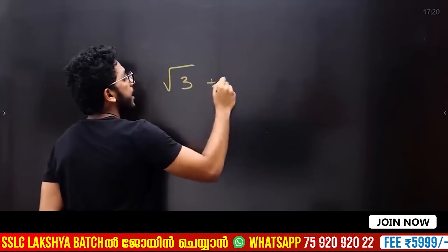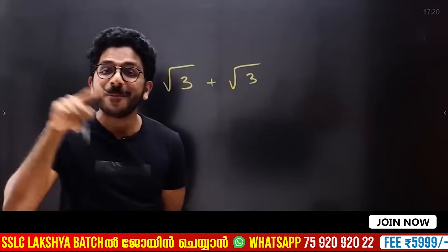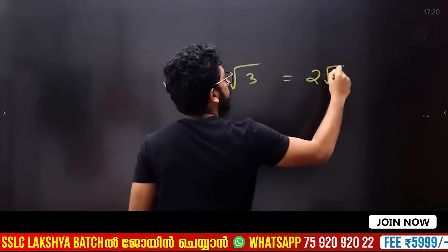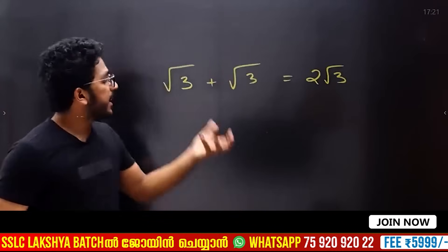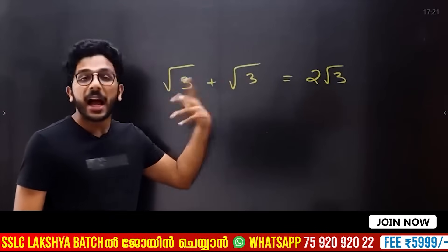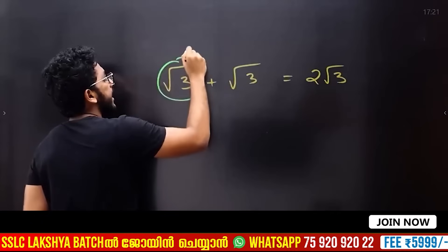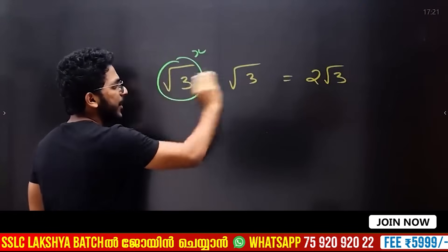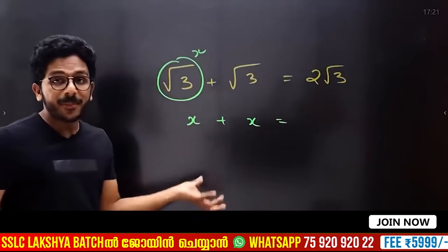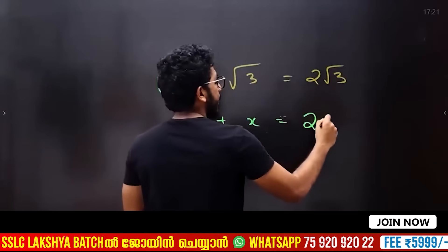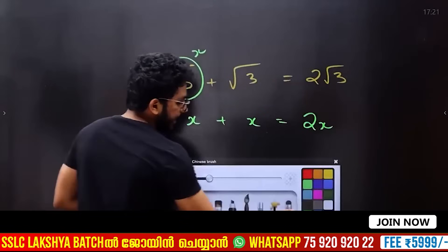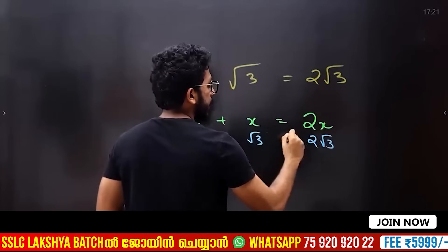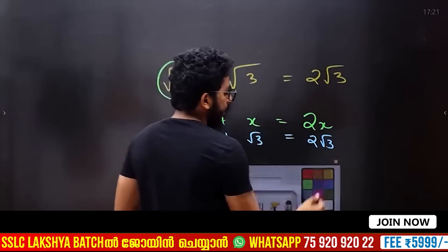I'll show you root 3 plus root 3. Let me add 2 apples like this. What is x? I am going to put the variable as x. Then I will answer this question. x plus x is equal to 2x. So if you add, you will get 2x. Root 3 plus root 3 is 2 root 3.